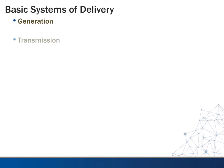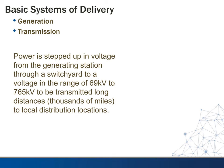Next we want to look at transmission. In this process, the power is stepped up in voltage from the generating station through a switch yard. This is generally in the range of 69 kilovolts to around 765 kilovolts. It can be higher in the United States, especially coming out of Canada, where it can get up into the megavolt range. This allows for the transmission of power over long distances — literally thousands of miles — to reach local distribution companies.